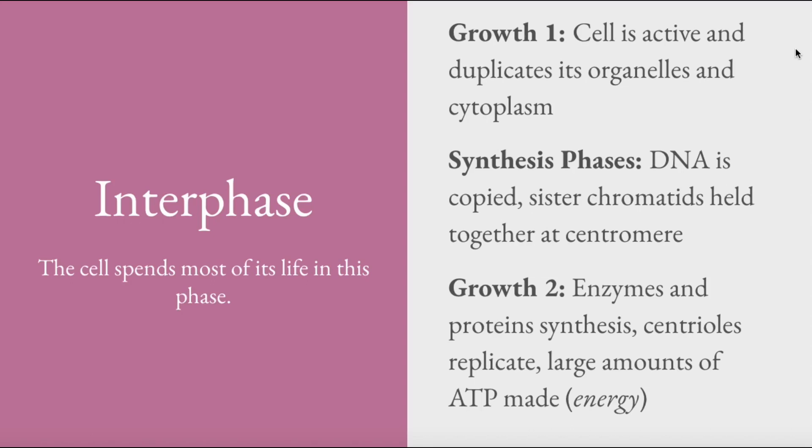This is where the DNA is copied. It is preparing for the cell division. It makes a copy of itself. They are held together at the centromere, and they are called sister chromatids. Then it enters growth two, where more enzymes and proteins are made. The centrioles replicate, and large amounts of ATP energy are made so that the cell prepares for division.